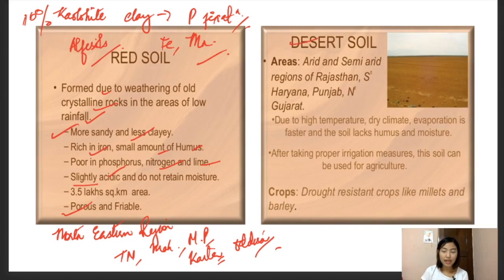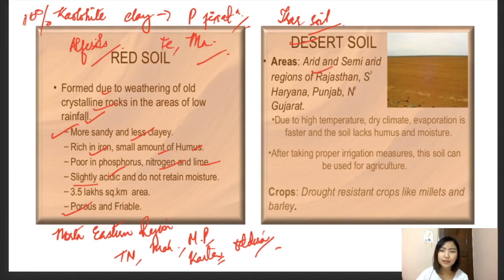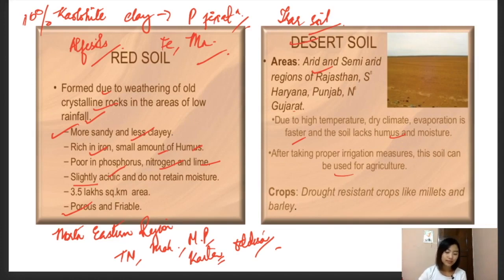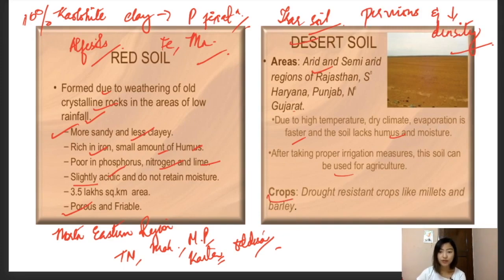Desert soils are found in the arid and semi-arid regions of Rajasthan, south Haryana, Punjab, and north Gujarat. Due to high temperature and dry climate, evaporation is faster and the soil lacks humus and moisture. After proper irrigation the soil can be used for agriculture. They have very negligible rainfall, leading to higher evaporation and higher chances of salinization and salt formation, making it very hard for crops to grow unless drought-tolerant or salt-tolerant crops are incorporated. These soils are highly pervious and have low density. Crops that can be grown include drought-resistant crops like millets and barley.